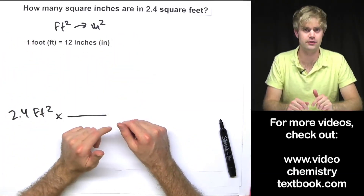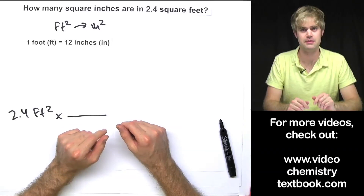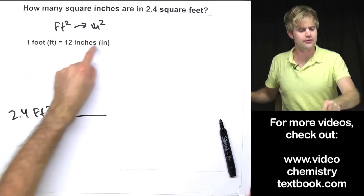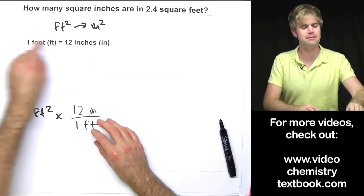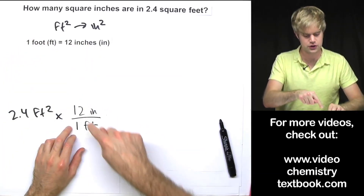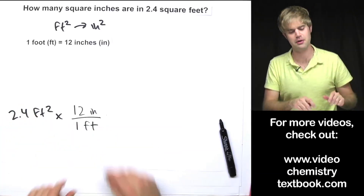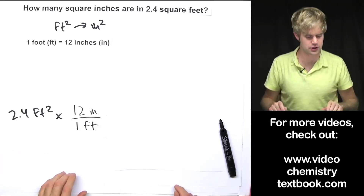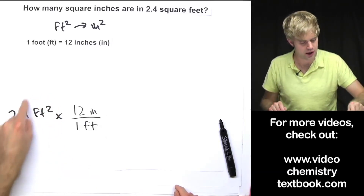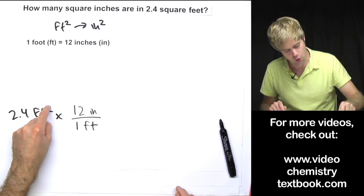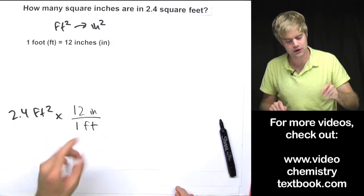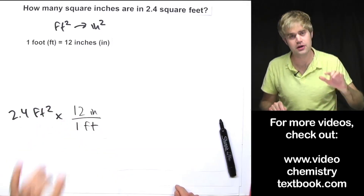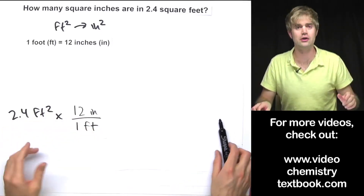One foot equals 12 inches. Here's a mistake that people often make — I don't want you to make it. Often people take a look at this relationship and think, okay, I'm going to make that into a conversion factor: 12 inches over 1 foot, and just multiply. Absolutely not. Don't do it. Why not? Because this unit up here is feet squared and this unit down here is just regular feet. You can't cancel them because they're different units — square feet versus regular feet.